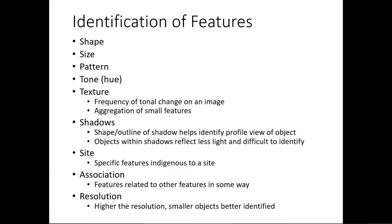Texture can be used to identify different features. A grassland and a forest are both green, but their textures are clearly different. You can easily differentiate a grassland from a forest based on texture. Similarly, you can differentiate a grassland from an orchard, or an orchard from a paddy field, because they all have different textures.